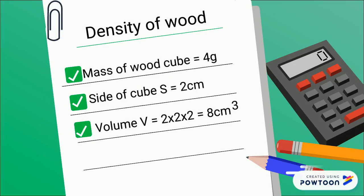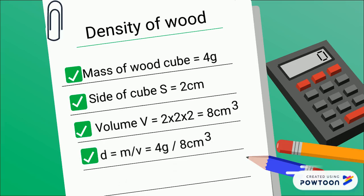Applying the formula density equals mass over volume, the density of the wooden cube is 0.5 grams per centimeter cubed.